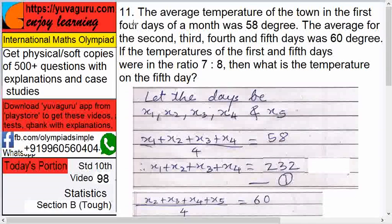The average temperature of a town in the first four days of a month was 58 degrees. The average for the second, third, fourth and fifth days was 60 degrees. If the temperatures of the first and fifth days were in the ratio 7:8, then what is the temperature on the fifth day?